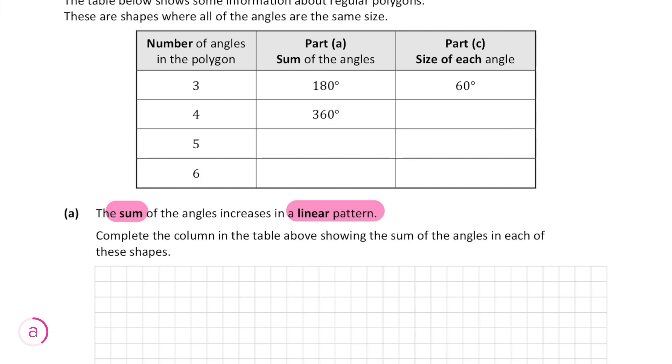In part a we're told that the sum of the angles is a linear pattern. Because it's a linear pattern we know that the first difference is always the same.